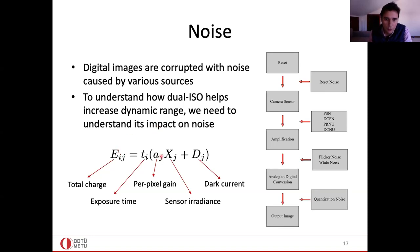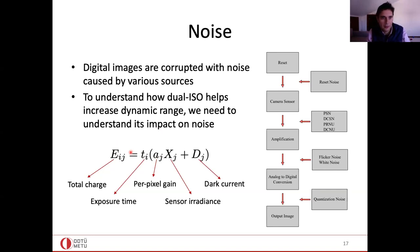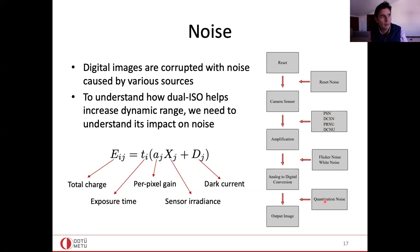To model noise: as we all know, noise is an unavoidable part of imaging. Any measurement made with a sensor comes with a certain amount of noise. There are multiple noise sources, including reset noise, photon shot noise, dark current noise, photo response non-uniformity, dark current non-uniformity, flicker noise, white noise, thermal noise, and quantization noise. All of them affect the captured image at different stages.